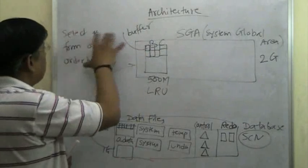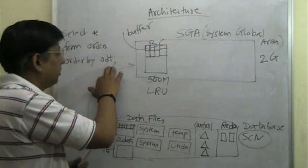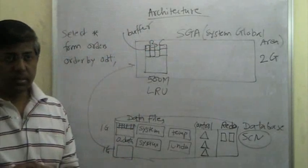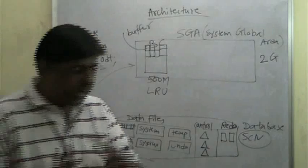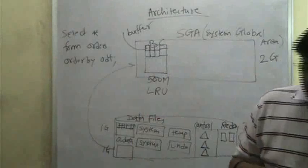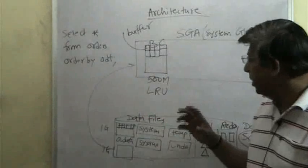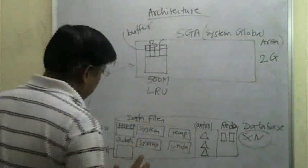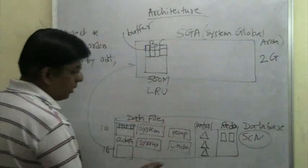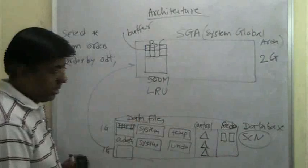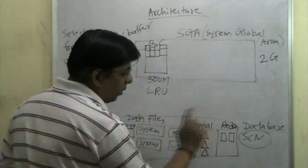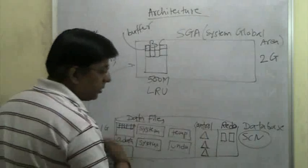So all the blocks are brought into the buffer cache — that is the first step, though there is a lot of mechanism that happens before that. To summarize: what is a database? A database is a set of files — data files, control files, and redo files. That is what a database is.